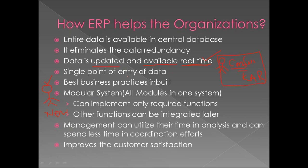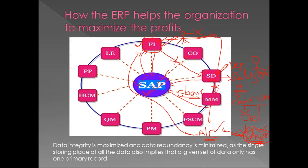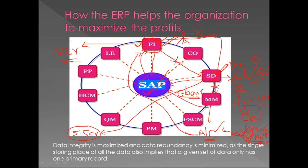Without ERP software, if the CEO asks the finance department how much sale happened today, they might say 5 crores, but the sales team might say 5.5 crores. Why the difference? Because one team has pending activities while the other doesn't - it is because of time lapse. This causes confusion and the CEO cannot make a decision based on inconsistent figures from different departments.